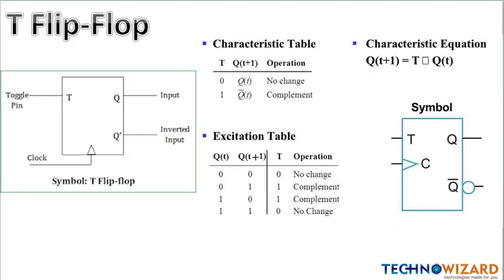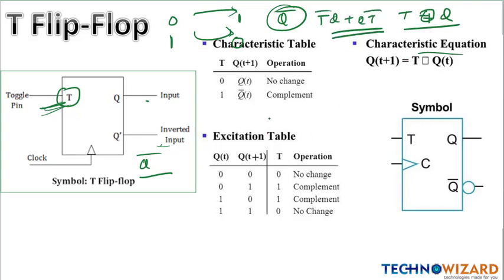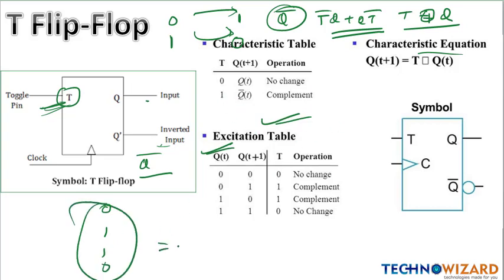Next is the T flip-flop, also called the toggle flip-flop. The T is the toggle pin — if zero is the input you get one, and if one is the input you get zero. You always get the complement output of the input. The characteristic equation is Q(next) = T ⊕ Q, which expands to T̄Q + TQ̄. The excitation table is the same as the XOR gate truth table: 0, 1, 1, 0.